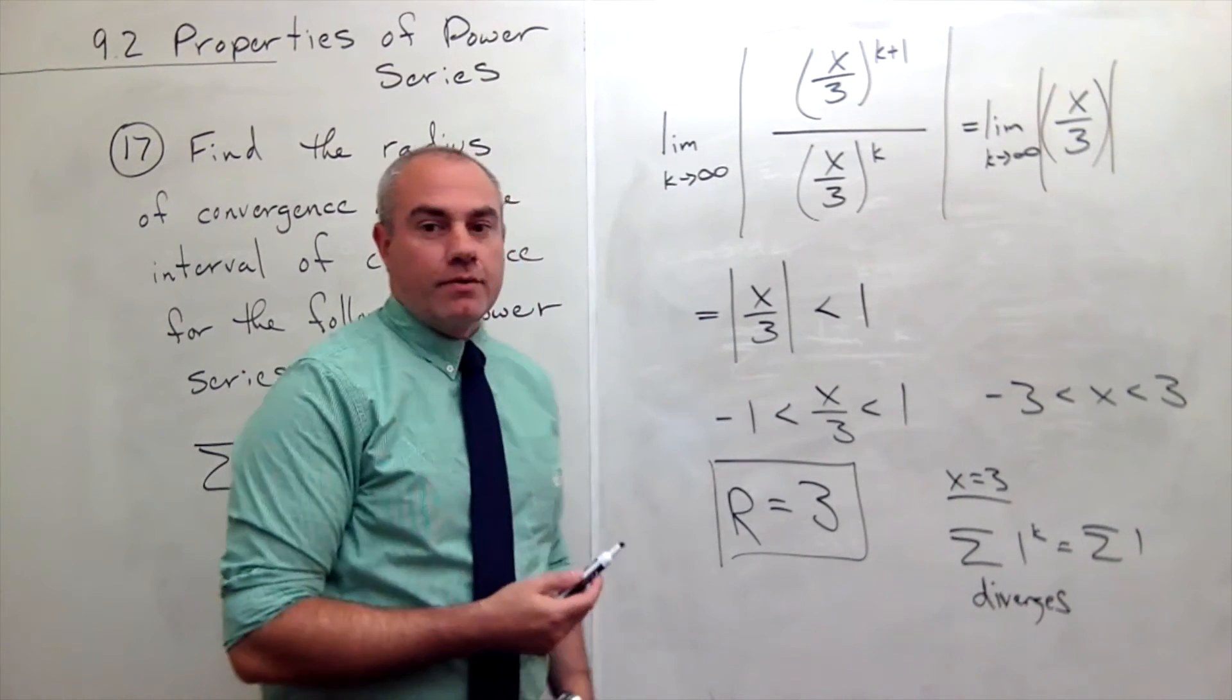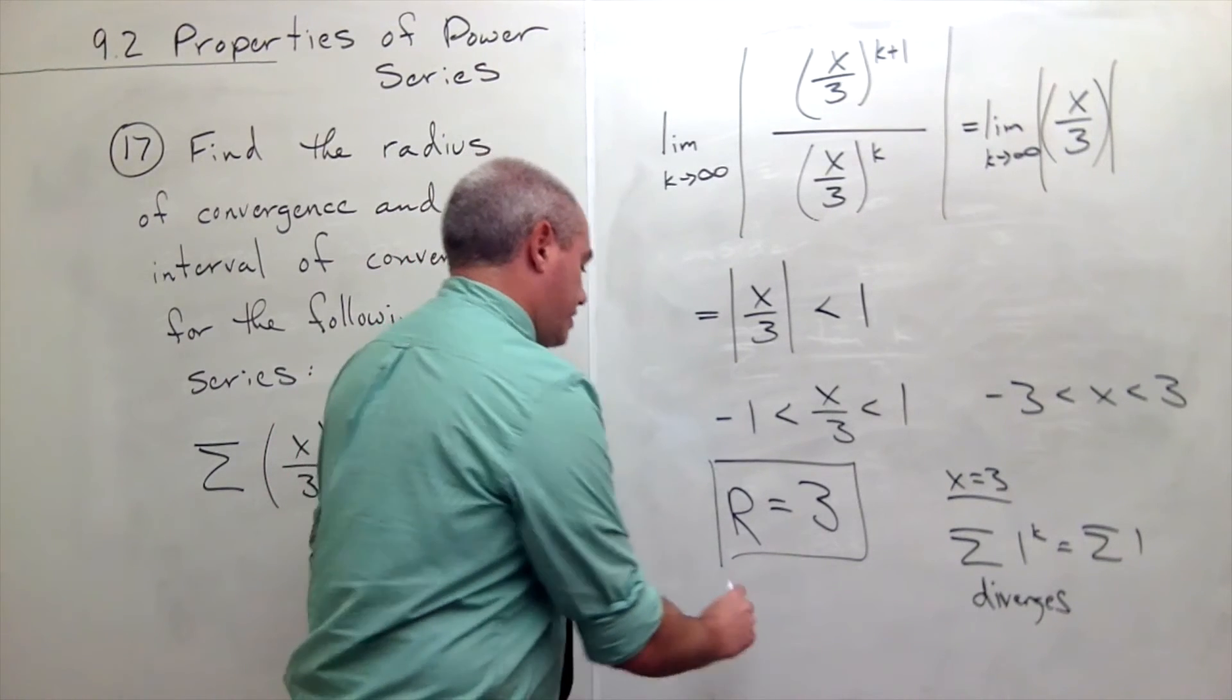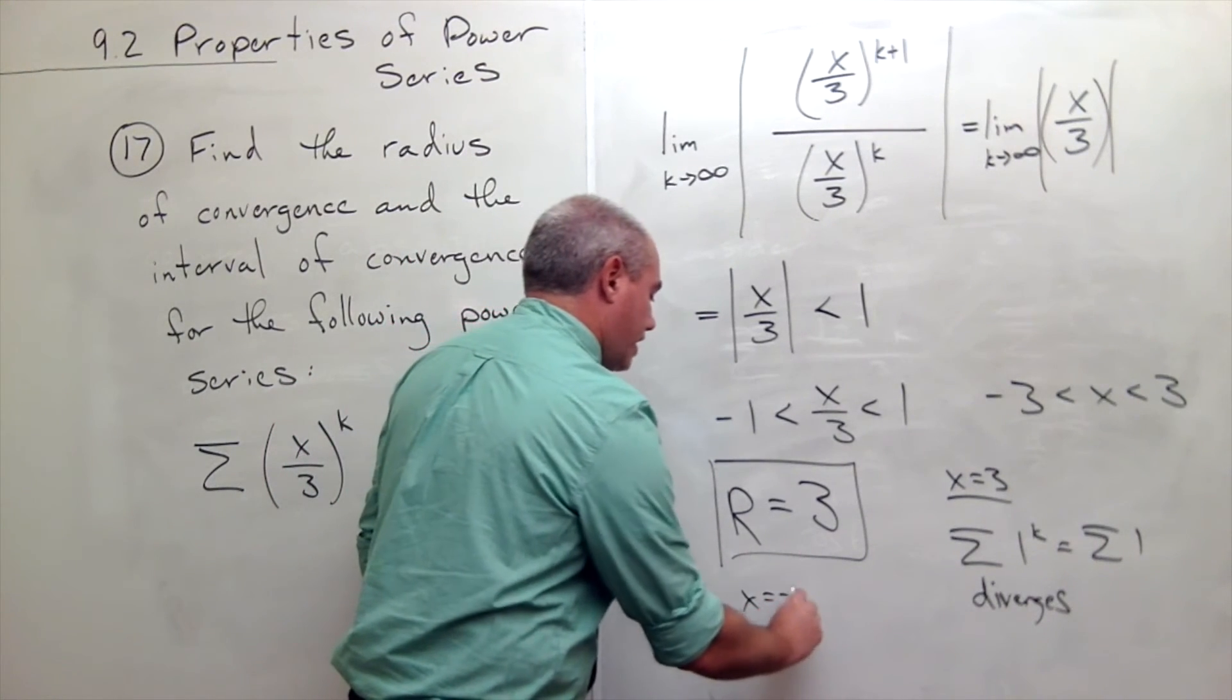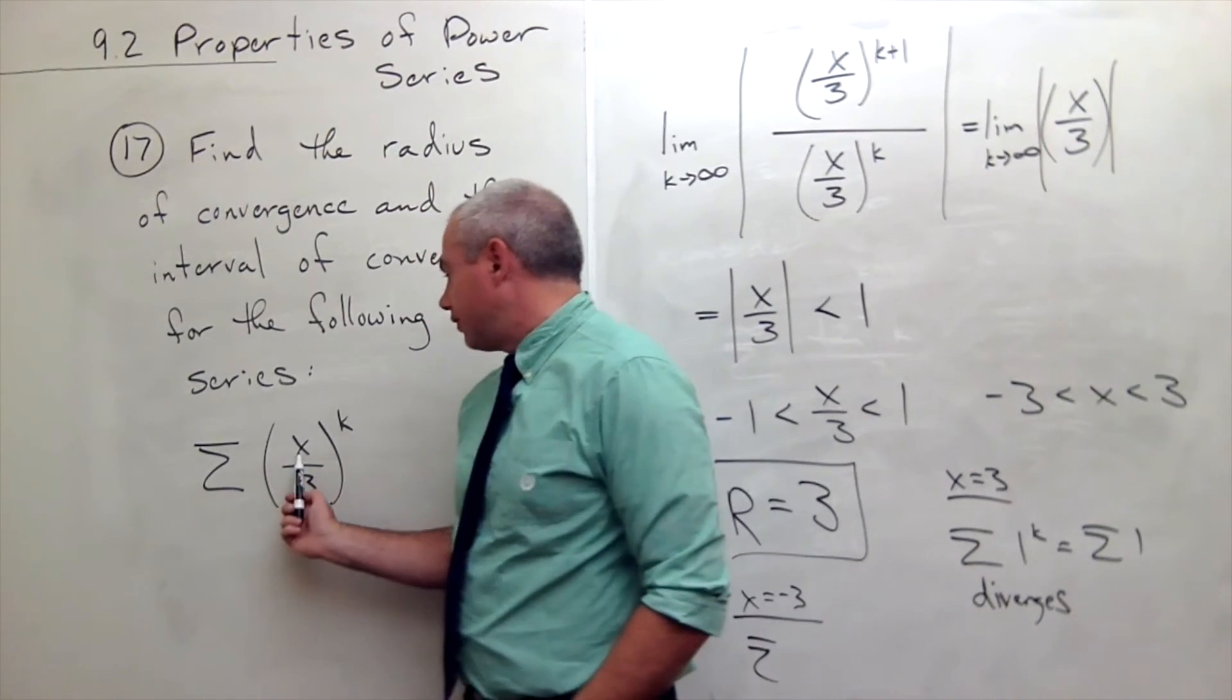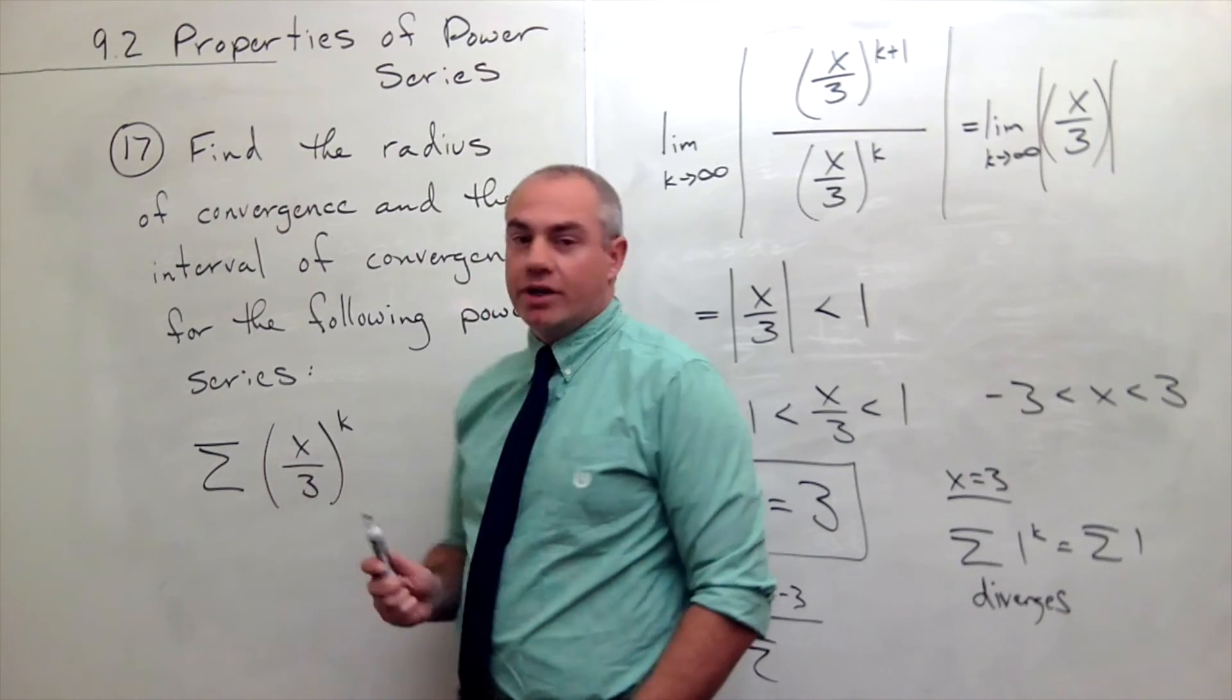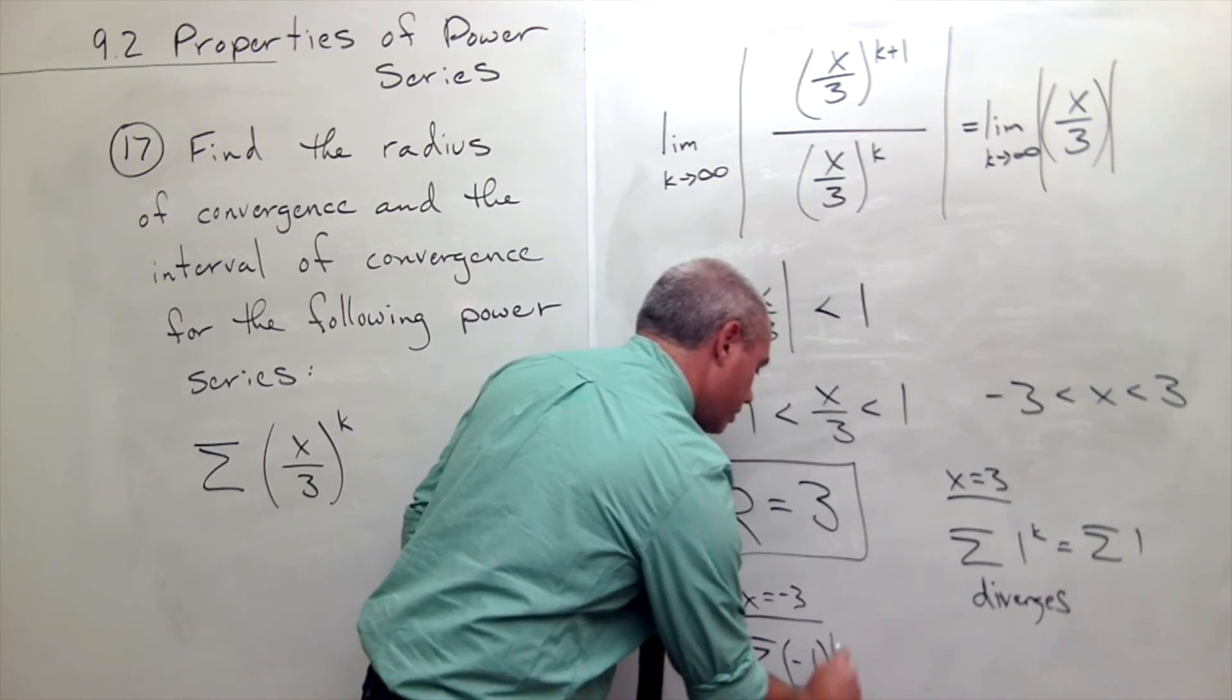What if x were equal to negative 3? Let's say x is equal to -3. Then what do we have? We have the sum. If I plug in -3 for x here, I get (-1) to the k. So I get (-1) to the k.